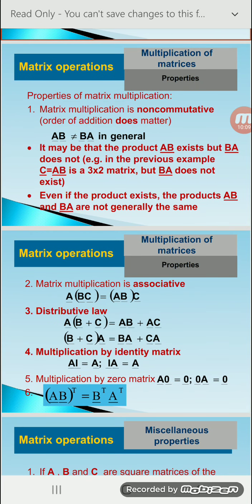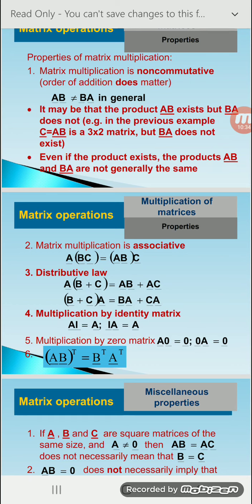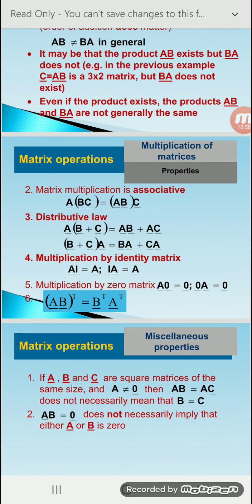Second property: matrix multiplication is associative — that means A(BC) equals (AB)C. Third property is the distributive law — A(B+C) equals AB + AC. Next, multiplication by the identity matrix: the identity matrix has all diagonal values equal to 1, so AI = A and IA = A. Multiplication by the zero matrix — where all elements are 0 — gives A·0 = 0.